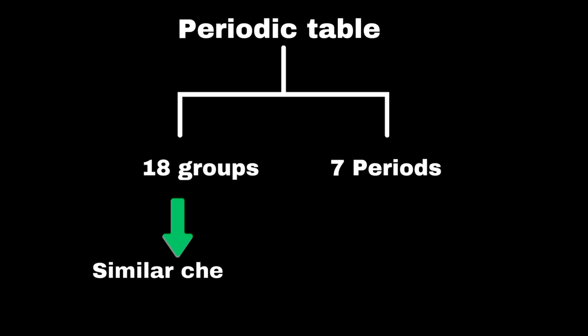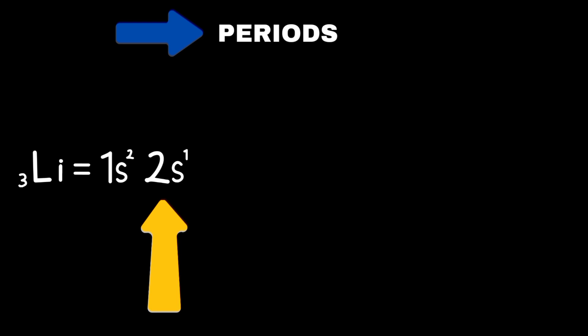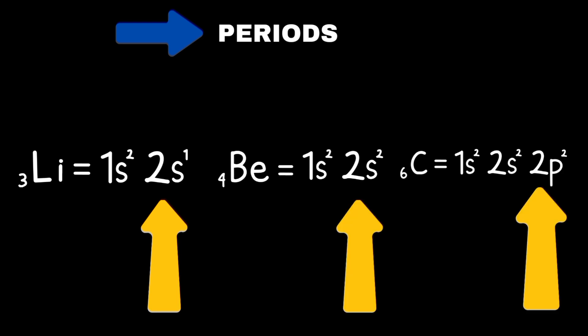Elements with similar chemical properties are placed in same group and they have same outer electronic configuration. For example, members of group 1A, except hydrogen are called alkali metals. In periods as we move left to right, outer electronic configuration changes on each step.